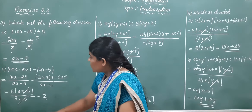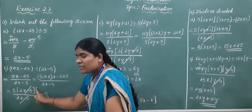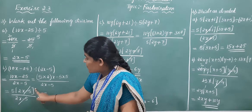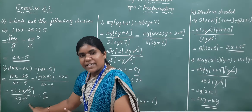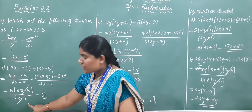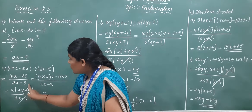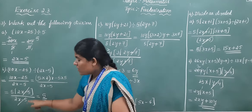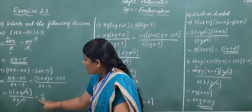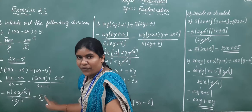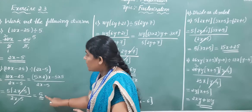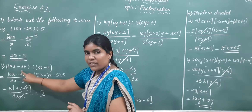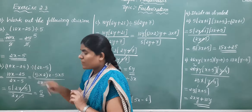Observe carefully: in the numerator, 2x minus 5 is there, and in the denominator, 2x minus 5 is there. Both get cancelled. The remaining term is 5. So 5 is the final answer to this question.